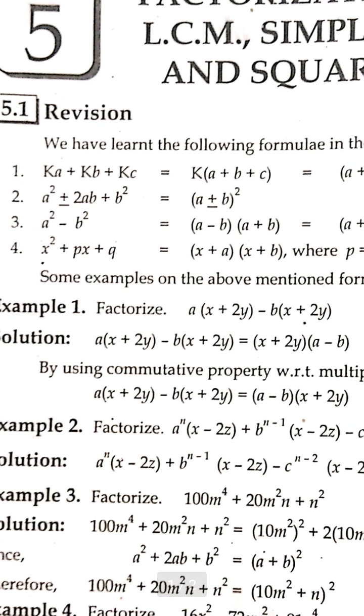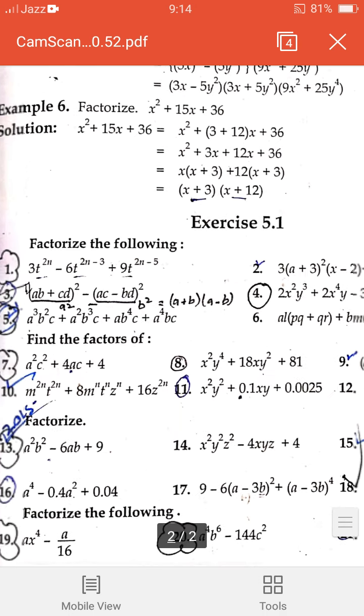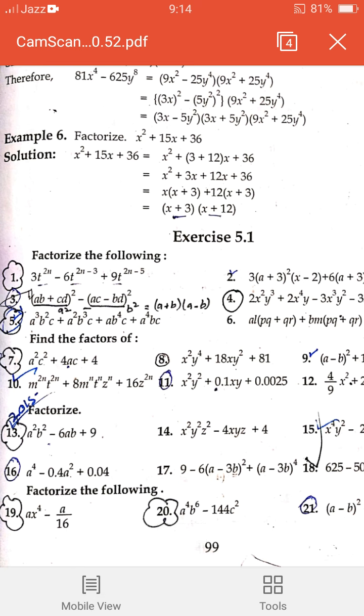Dear students, this is just a review of algebra from class 8 with all the basic formulas applied: A + B whole square, A² - B², and middle term factorization. Exercise 5.1 is your assignment. You have to solve questions on factorization and finding factors.